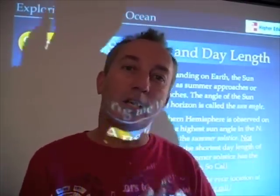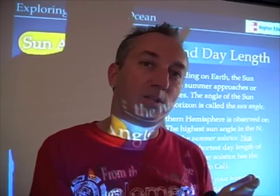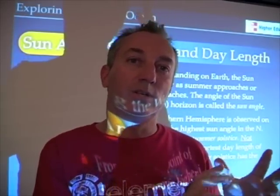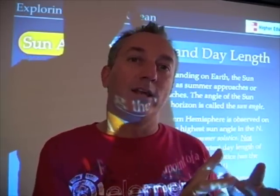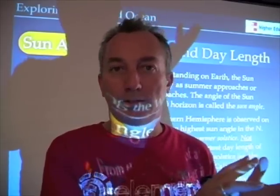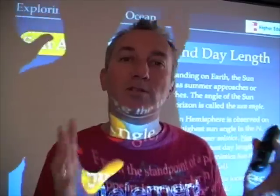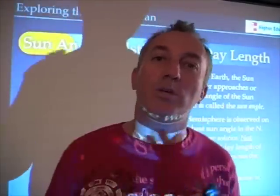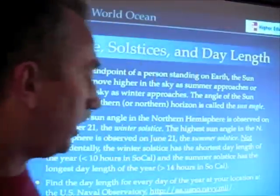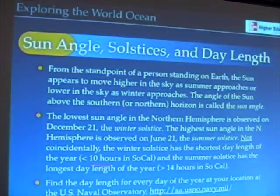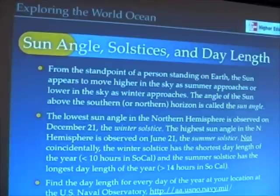Lower sun angles, shorter days, less intense radiation per unit area are going to keep our earth cool and aren't going to be as effective for photosynthesis. That's where we're going with this seasonal cycle — make sure you understand it. Study that figure and this slide, and make sure you understand the kinds of changes that happen in sun angle, day length, and solar intensity through the seasonal cycle, because it will be very important when we talk about productivity in the ocean.